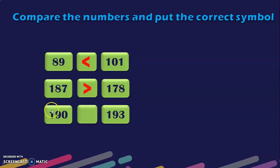Next question: 190 and 193. In the 100s place both have 1. Next look at the 10s place — both have 9 as the 10s place value. So next jump to the 1s place, where we have 0 and 3. Since 0 is lesser than 3, 190 is lesser than 193.